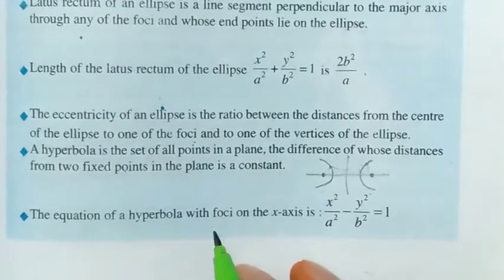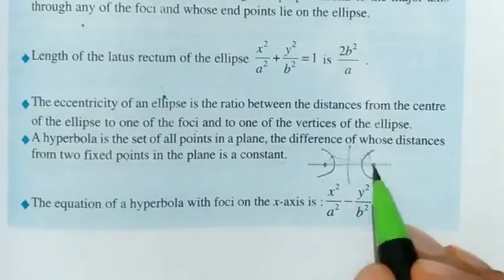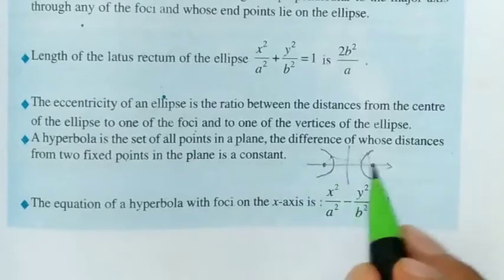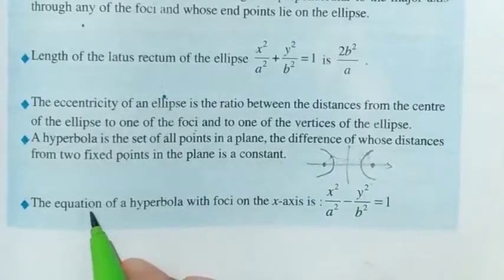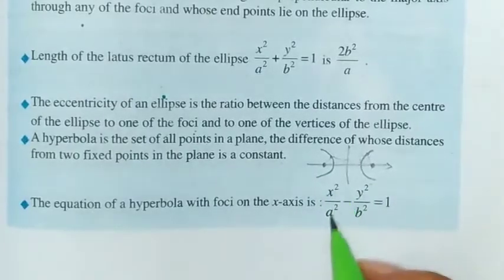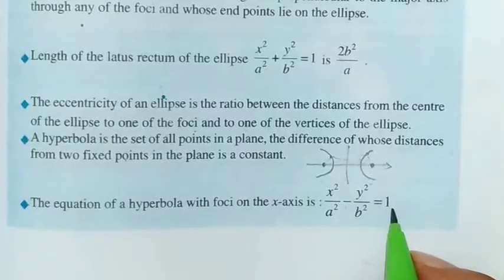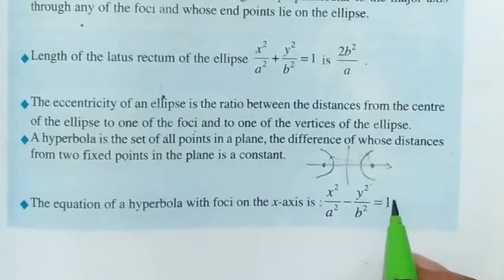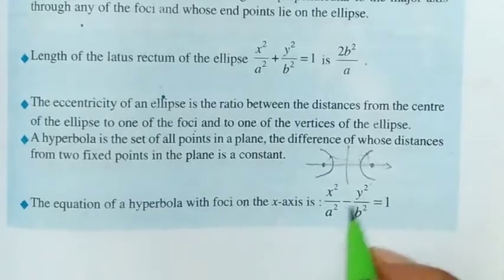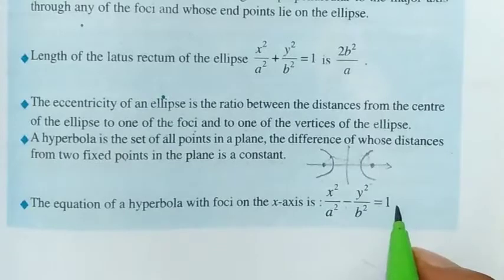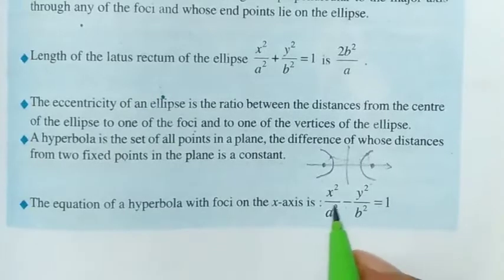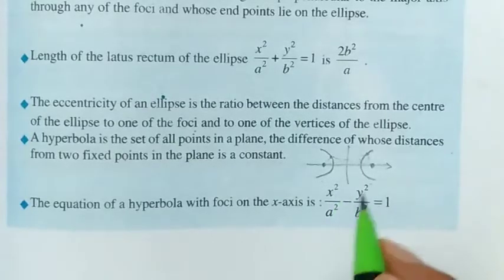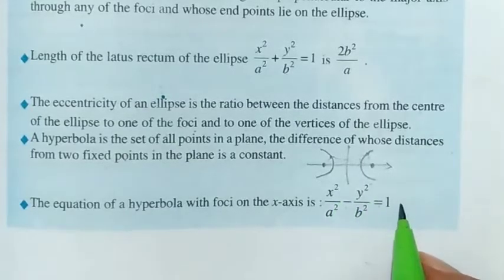The equation of a hyperbola with foci on the x-axis is: x²/a² − y²/b² = 1. To compare: for a parabola it is y² = 4ax; for an ellipse it is x²/a² + y²/b² = 1; and for a hyperbola it is x²/a² − y²/b² = 1.